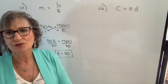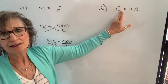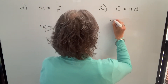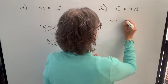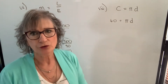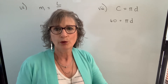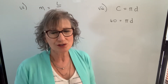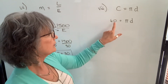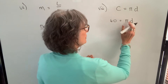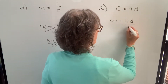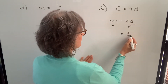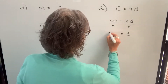This next formula is for the circumference of a circle: C equals pi times D. We often know the diameter and find the circumference, but here we're given the circumference — 60 centimeters — and asked to find the diameter. Pi is not a variable; it's a specific number (3.14159...). To isolate D, we divide both sides by pi. The pi cancels, and 60 divided by pi gives us approximately 19.1.